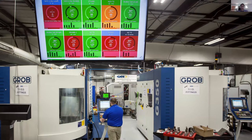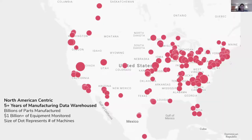Customers can see nice dashboards showing their utilization, whether machines are on or off, how many parts they've made, if they're at their parts goal. We've been doing this for over five years, so we have over a billion parts tracked, and we're currently tracking over a billion dollars worth of capital equipment. Each dot on this map represents an individual customer — hundreds of customers with thousands of different machines.